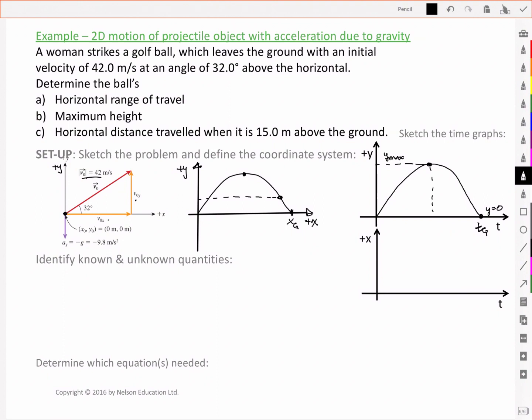We'll have that occurring at a time tm. And we're interested in the horizontal distance when it is 15 meters above the ground. And so we'll call that a t15. So that's when the y is equal to 15 meters. And so if we look at the corresponding times down here, remember that our x motion is a uniform motion.